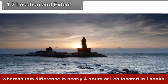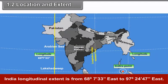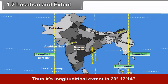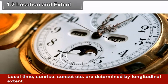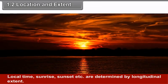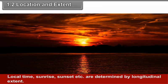The difference between the longest and shortest day near Kanyakumari is about 45 minutes, whereas the difference is nearly 4 hours at Leh, located in Ladakh. India's longitudinal extent is from 68 degrees 7 minutes 33 seconds east to 97 degrees 24 minutes 47 seconds east, giving a longitudinal extent of 29 degrees 17 minutes 14 seconds.